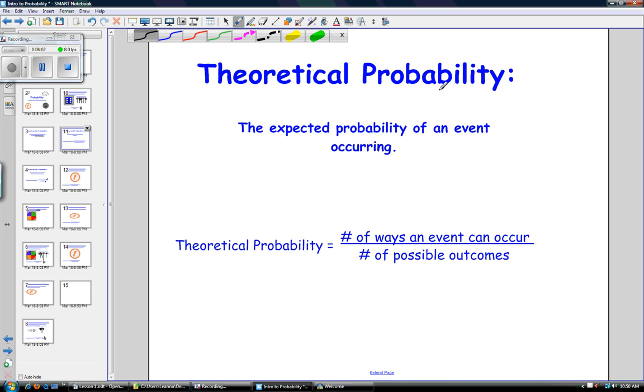And the theoretical probability, this is the second kind of probability that we have, is the expected probability of an event occurring. So the number of ways an event can happen over the number of possible outcomes.